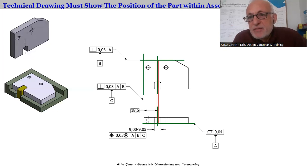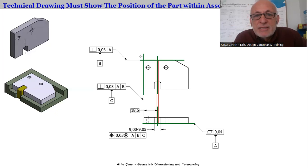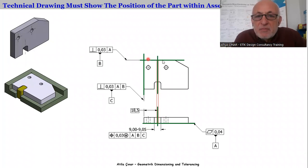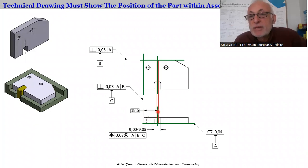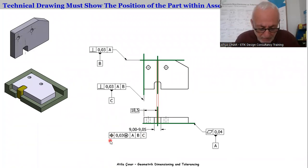We usually use CMMs for these controls. But if we don't have a CMM, we can also control position tolerance by checking the perpendicularity of the axis plane with A, the perpendicularity of the axis plane with B, and the dimension between datum C and the actual axis plane. We can use surface plates, height gauges, comparators, and other tools if we don't have CMMs.